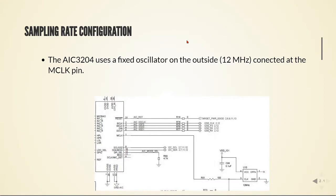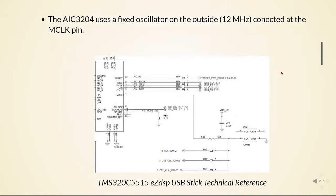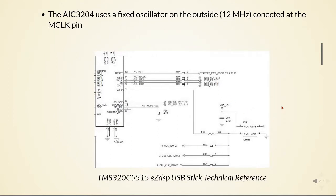Another important configuration is the sampling rate configuration. Last time we used 48 kHz, but we can also change to multiples of 48 kHz, and 24, 12 kHz, and also 44.1 kHz. For that, we need to look at the USB stick technical reference. There is an external oscillator of 12 MHz connected to the pin called mclock. The sampling rate is calculated by taking this 12 MHz reference and manipulating it through registers to achieve the desired sampling frequency.